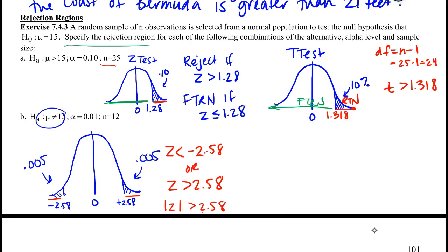And for the T, same business. Once you split this up, you have your two tails. Both of them are only 0.005.